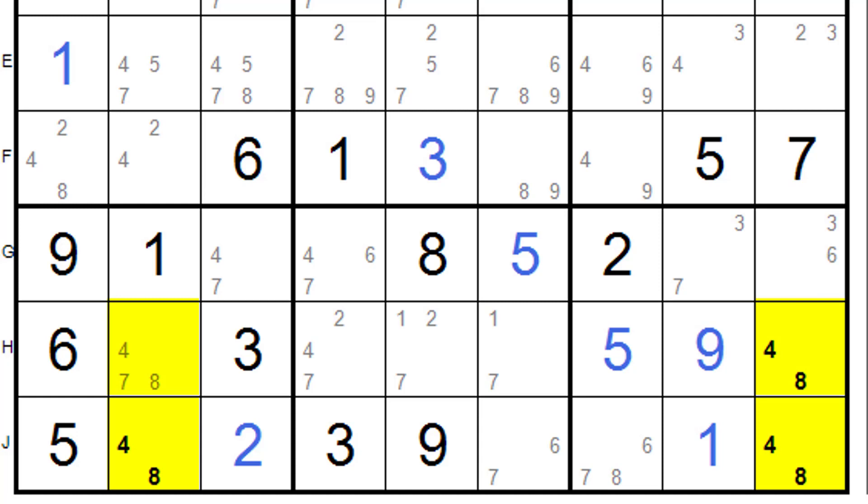But you can see we have three doubles in three of the squares and the fourth one has got a four seven eight. So H2 has four seven eight.